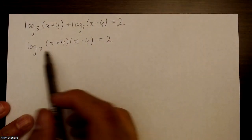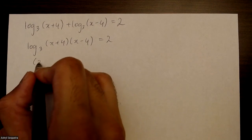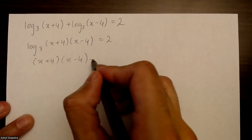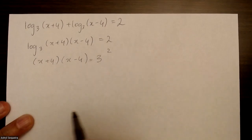Then I'm just going to move my base to the other side. When I do that, it's going to become 3 to the exponent of 2.